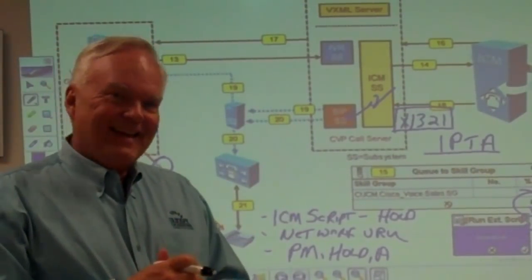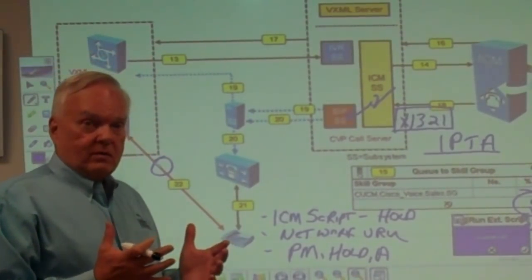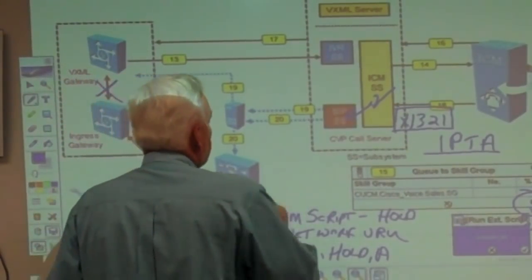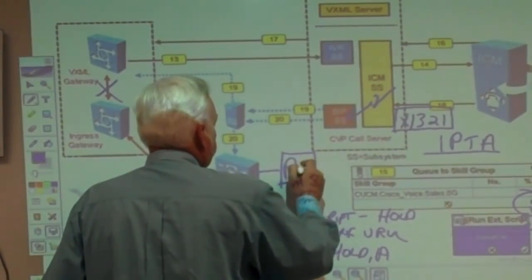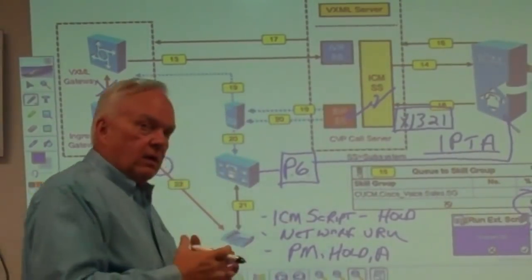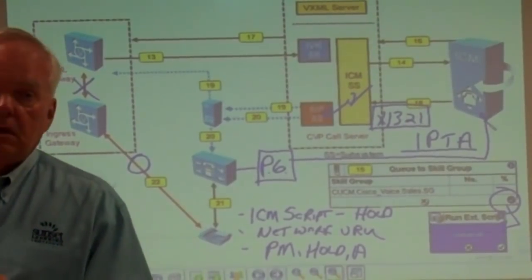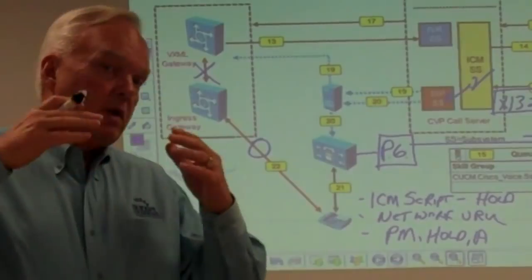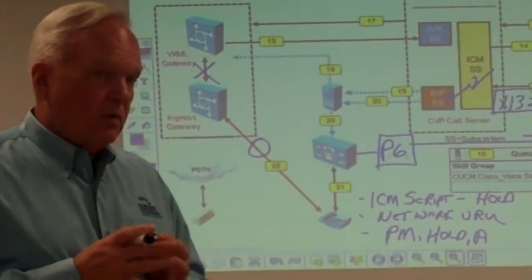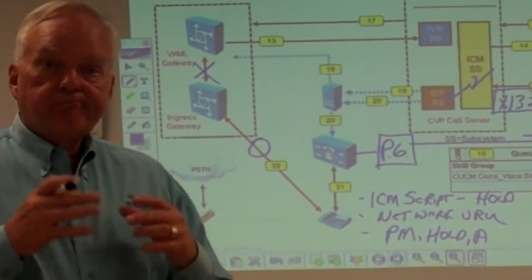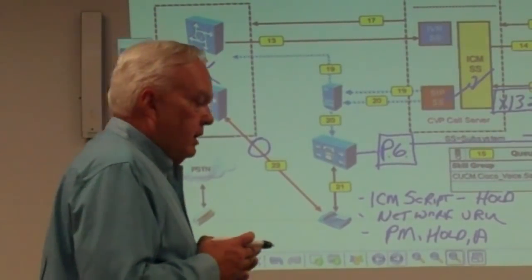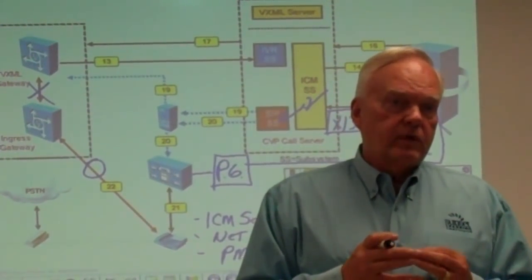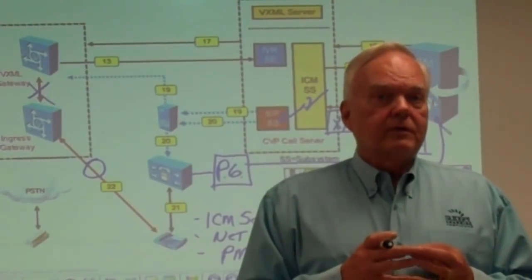But wait — how does ICM know that the call was answered, put on hold, or whatever happened to it? ICM knows because when we built this system, we put a peripheral gateway in there. The peripheral gateway connects to ICM and provides agent status to ICM. ICM can then report that the call has been answered, hung up, put on hold — whatever the status might be — passed along through that peripheral gateway back to ICM. And that is how it happens. Hopefully that's been of some help to you. On behalf of Sunset Learning, I'm Marty Griffin — thank you for watching and we'll see you soon.